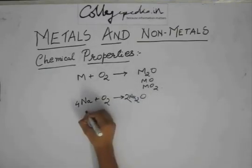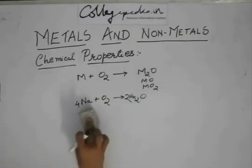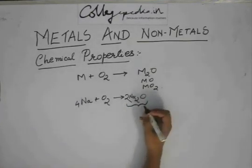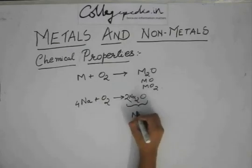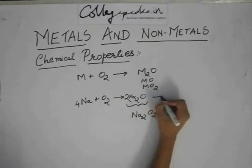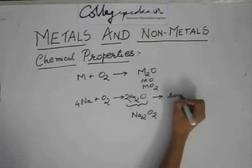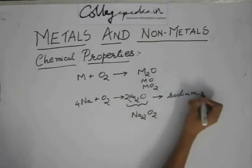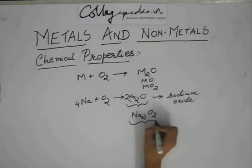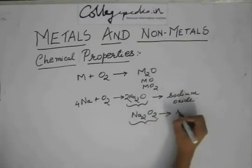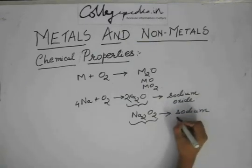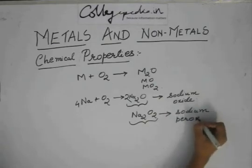Actually, when sodium reacts with O2, it can form another oxide. It's not necessarily Na2O; it can form Na2O2. This is called sodium oxide, and this is called sodium peroxide.